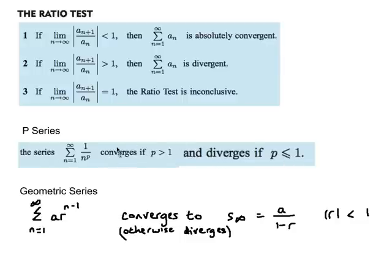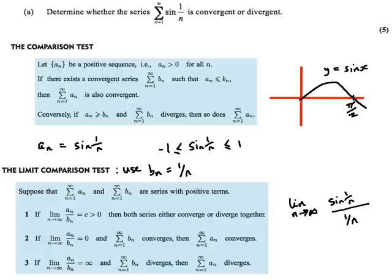Okay, now 1 over n is basically this p series here. Now, when p is 1, so it's this situation here, we have a divergent series. Okay, so we know that this here will diverge. The series for 1 over n will diverge. Okay, so we see what happens.